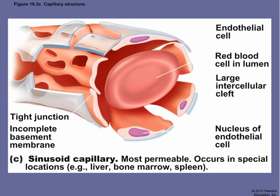The third and most permeable type are sinusoid capillaries. They have an incomplete basement membrane and large pores between cells that readily allow transport of substances in and out. We find these in organs like the liver, bone marrow, and spleen. In the spleen, which recycles worn-out blood cells, macrophages sitting outside these capillaries reach in, grab red blood cells, rip them apart, and pull them out for recycling — requiring a very porous blood vessel.